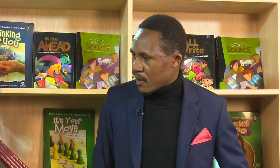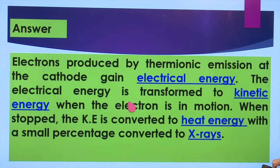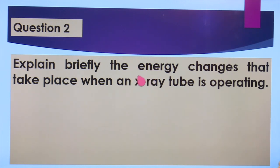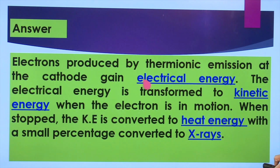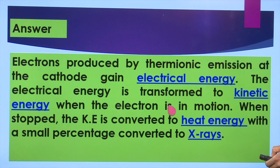We know that energy cannot be destroyed or created — it is only transformed from one form to another. In the X-ray tube, we start with electrical energy, convert it to kinetic energy, and end with heat energy and X-rays. Of course there are others — for the electrons to be emitted we need heat energy through thermionic emission, but the main energy changes are electrical → kinetic → heat and X-rays.